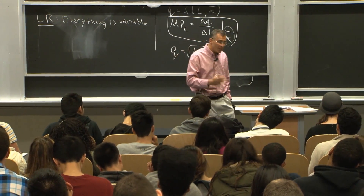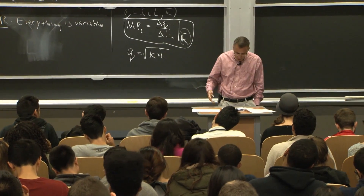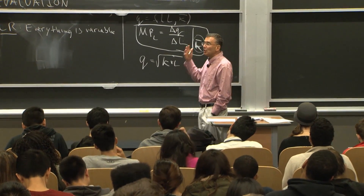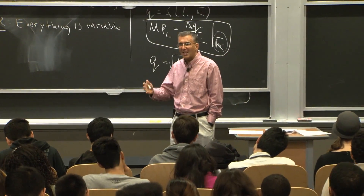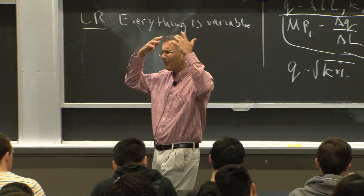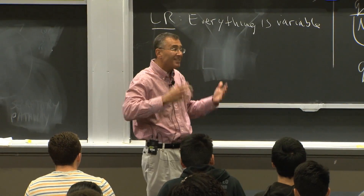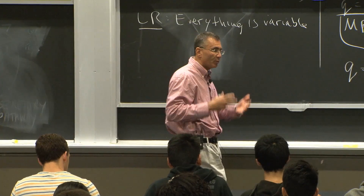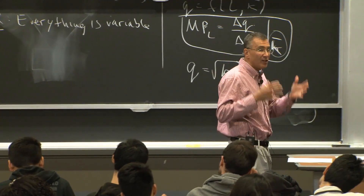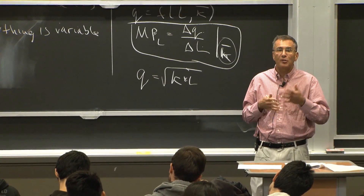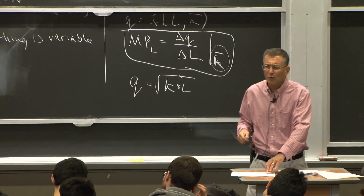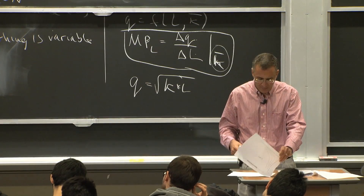Similarly, the shape of isoquants is going to be determined by how substitutable capital and labor are in production. Unlike the vague notion of preferences over pizza and movies, this is the technological answer — given the black box that is the technology, how substitutable are capital and labor? Let's do a couple of extreme examples.